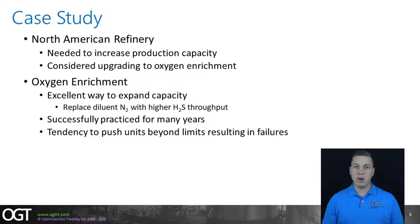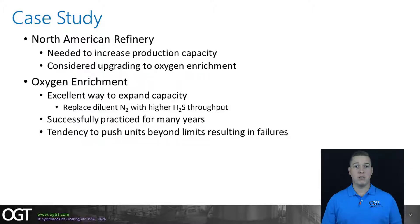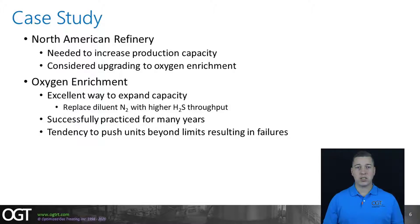The case involves a North American refinery that was considering adding oxygen enrichment to their Claus unit in an effort to increase production capacity. Oxygen enrichment in an SRU can be a simple and inexpensive way to squeeze more hydraulic capacity through a plant without requiring a huge capital expenditure — it increases the oxygen content in combustion air, reducing the nitrogen content, allowing the capacity taken up by nitrogen to be used by H2S in the feed gas. This type of capacity expansion has been practiced successfully for many years, oftentimes without incident. However, if the plant is already dangling on the edge, adding in oxygen can be the straw that causes it to fail, sometimes catastrophically.